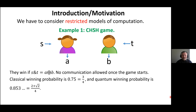In order to show quantum advantage, we restrict ourselves to restricted models of computation. In particular, consider the well-known CHSH game, also known as Bell's inequality, where the two playing parties, Alice and Bob, are supplied with random bit strings S and T, and they have to come up with output bits A and B such that exclusive OR of A and B equals the Boolean product of S and T. S and T are uniformly distributed randomly and no communication is allowed once the game starts. The quantum winning probability of (2 + √2)/4 is greater than the classical probability of 3/4, giving a quantum advantage.